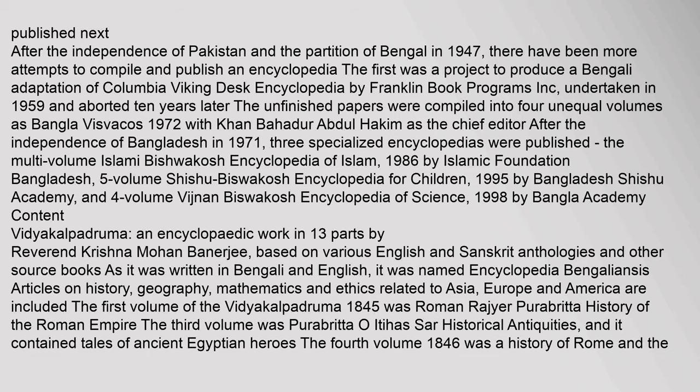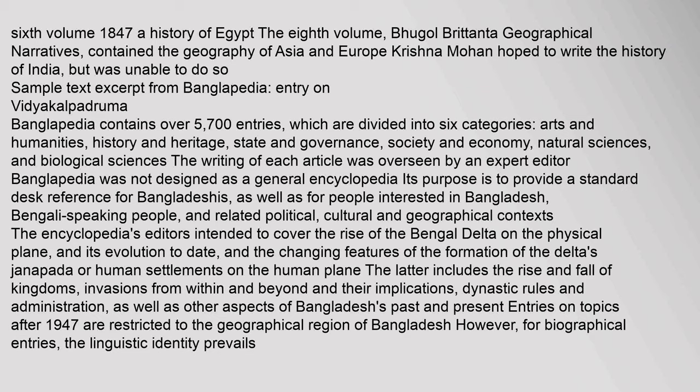Vidyakalpadrumah was an encyclopedic work in thirteen parts by Reverend Krishna Mohan Banerjee, based on various English and Sanskrit anthologies. Written in Bengali and English, it was named Encyclopedia Bengalensis. Articles on history, geography, mathematics, and ethics related to Asia, Europe, and America are included. The first volume (1845) was Roman Rajyir Pura Brita (History of the Roman Empire). The third volume was Pura Brita o Ittia's Sar (Historical Antiquities), containing tales of ancient Egyptian heroes. The fourth volume (1846) was A History of Rome, the sixth (1847) A History of Egypt, and the eighth, Bugle Britanta, covered the geography of Asia and Europe. Krishna Mohan hoped to write the history of India but was unable to do so.